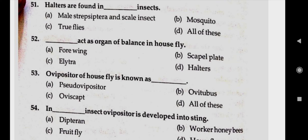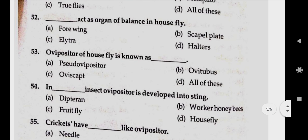Question number fifty-four: dash insect ovipositor is developed into a sting. Answer is worker ants — answer B.